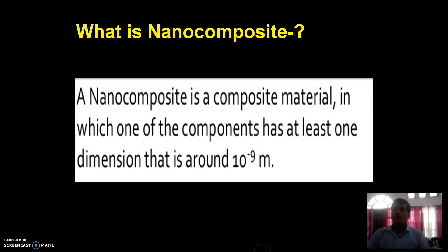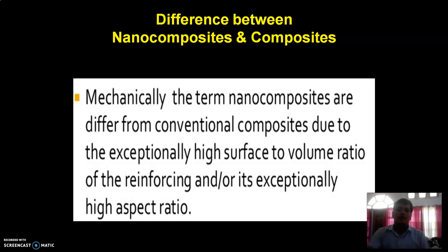Then, what is a nanocomposite? A nanocomposite is a composite material in which one of the components has at least one dimension that is around 10 to the power of minus 9 meters. Now, what are the differences between nanocomposites and composites? Mechanically, nanocomposites differ from conventional composites due to the exceptionally high surface-to-volume ratio, because nanomaterials are very small in size, and their exceptionally high aspect ratio.